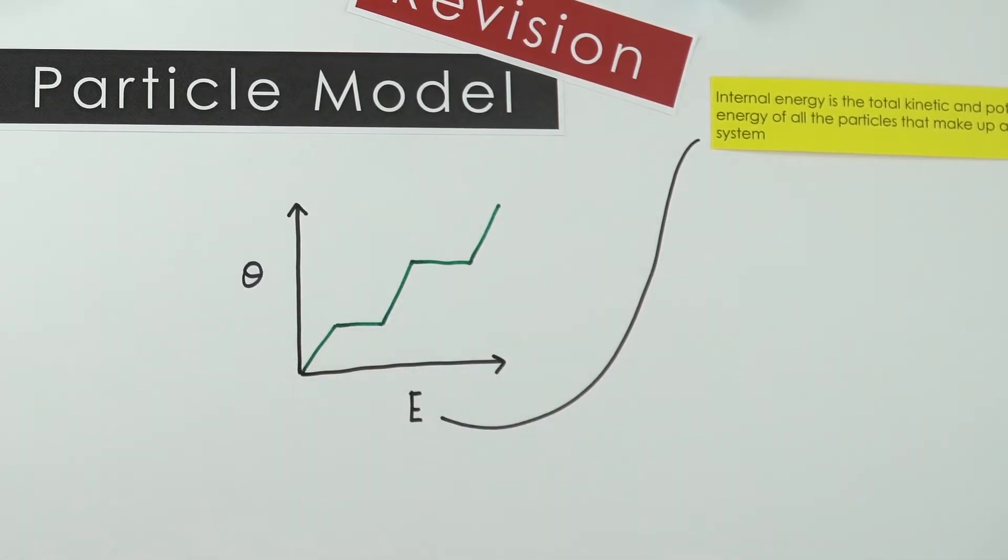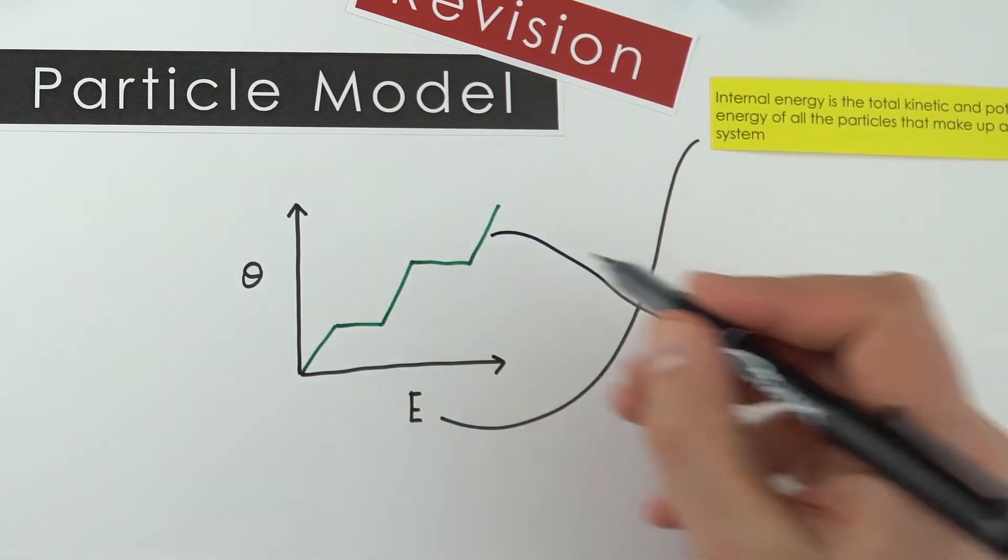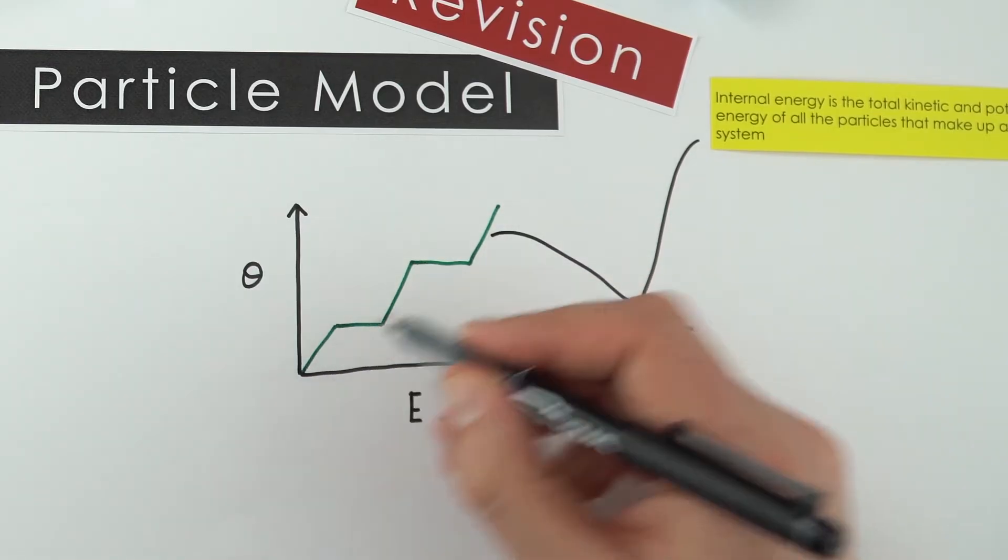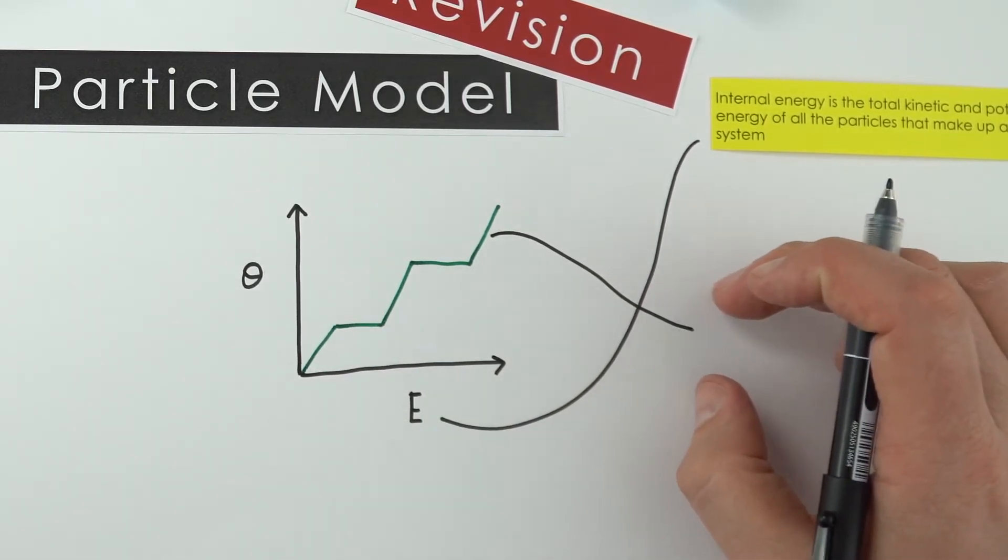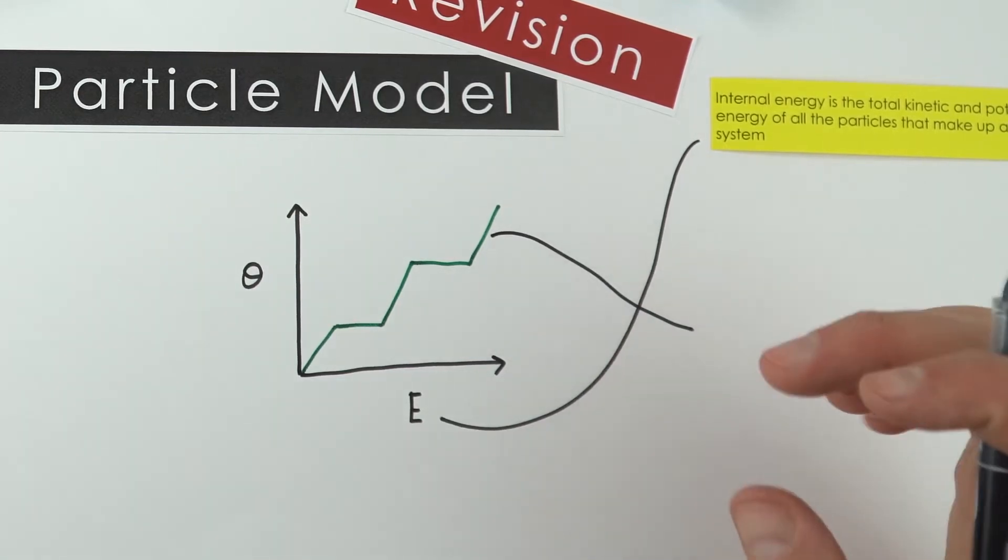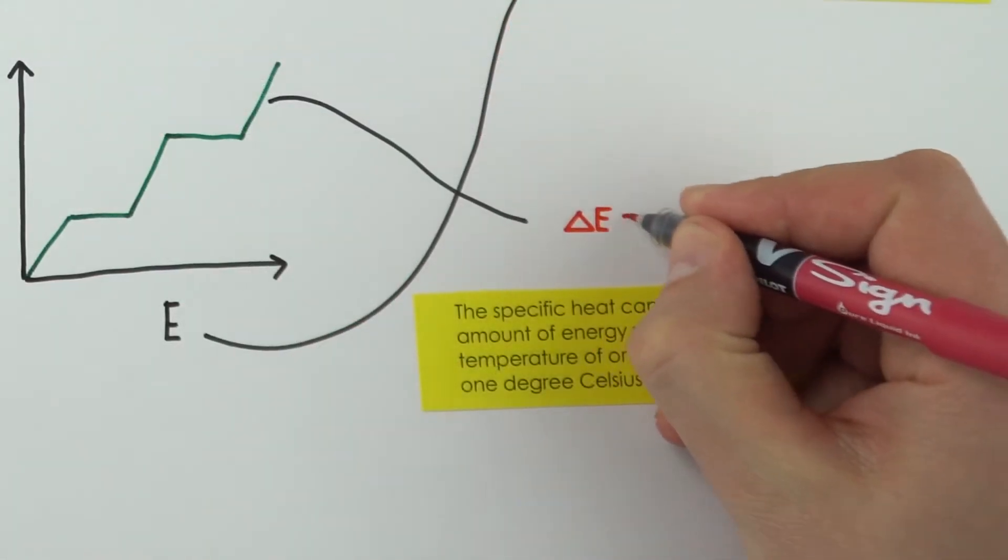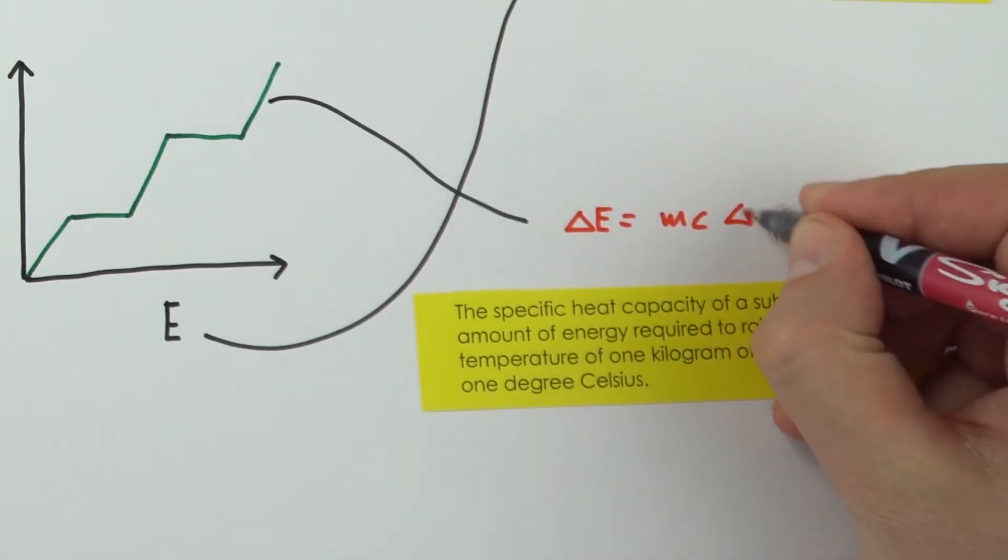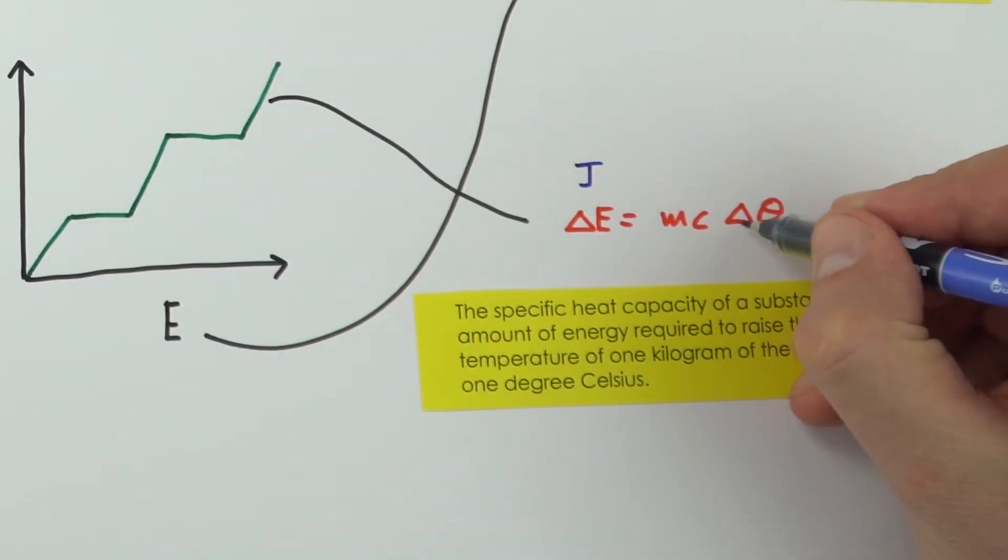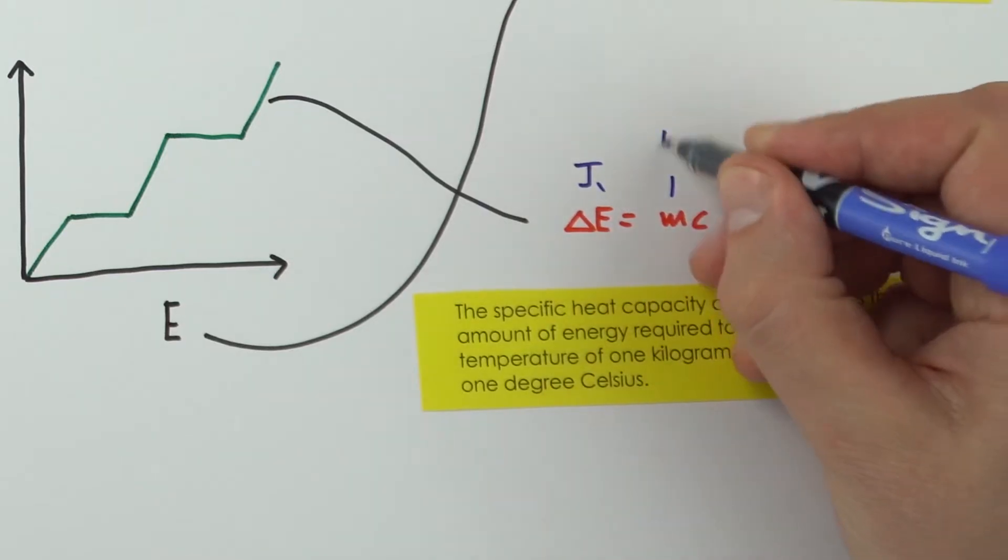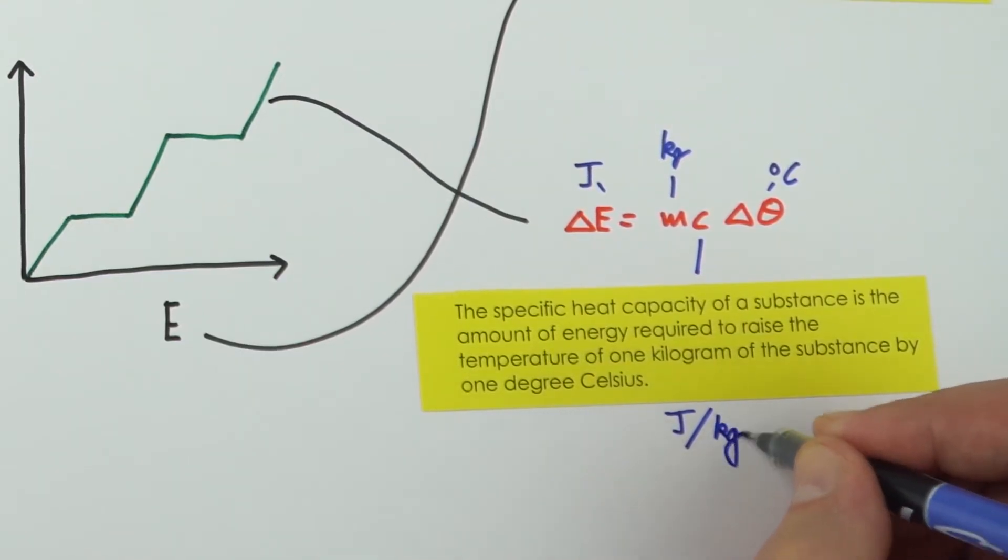We can think about the amount of energy that it needs to go from one temperature to another. When we have these regions here, we have something which is maybe a gas, a liquid, or a solid. If we want to look at the amount of energy it takes to heat something up, we can look at something called the specific heat capacity. The change in internal energy is equal to mc delta theta, where we have our change in energy in joules, change in temperature in degrees Celsius, mass in kilograms, and c is our specific heat capacity, measured in joules per kilogram per degree.